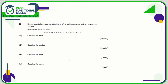Question 8 — the mean: add up all of these times and divide by 20 because there are 20 values. The total comes to 117, and 117 divided by 20 is 5.85 minutes.